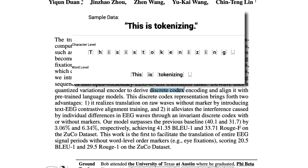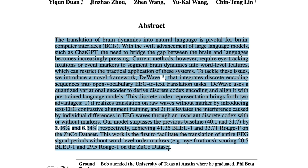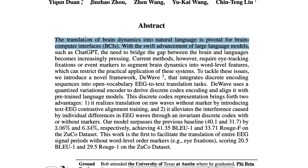In simple terms, you can think of this discrete codex as like a token in a sentence. If you have a large language model like ChatGPT, the first thing you do is take all the text and split it into tokens that you feed into the model, so it can learn what to predict next. Similarly here, they're taking the EEG signal and creating a discrete codex representation. Because of this, they have two advantages — one being that it realizes translation on raw waves without markers, by introducing text-EEG contrastive alignment training.